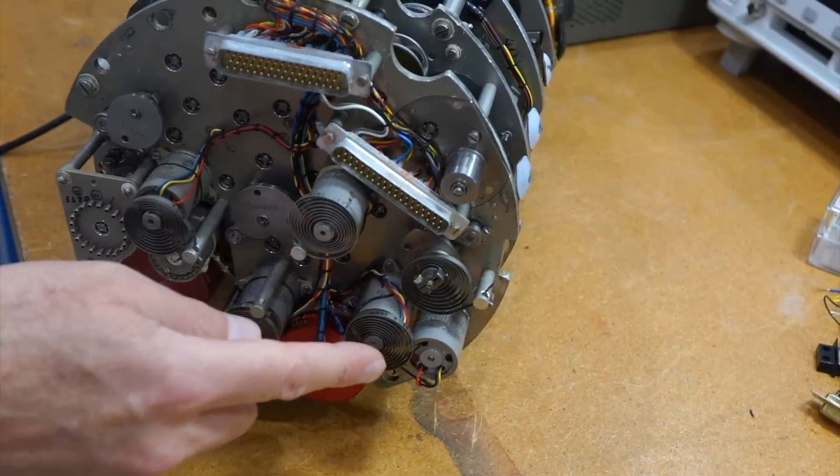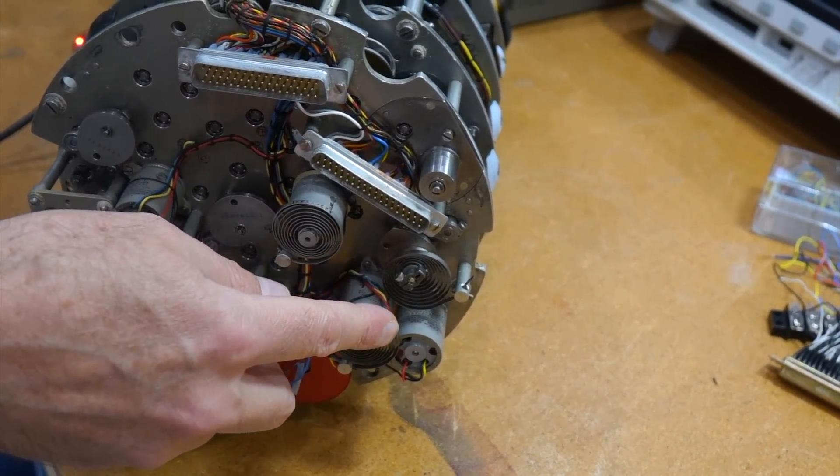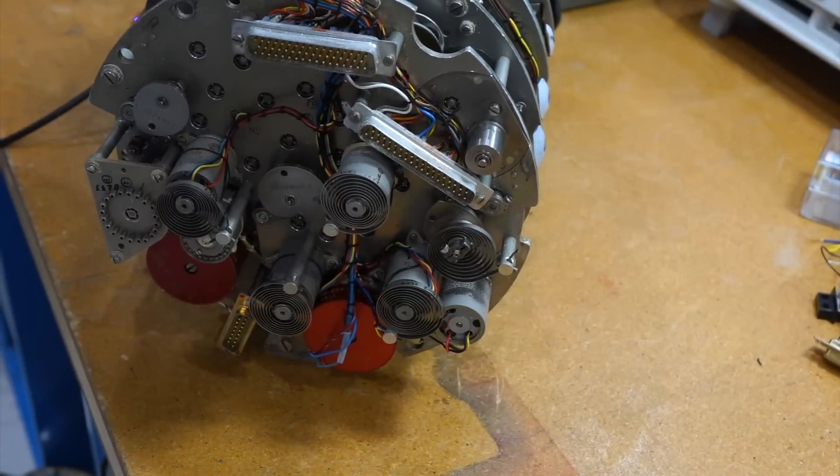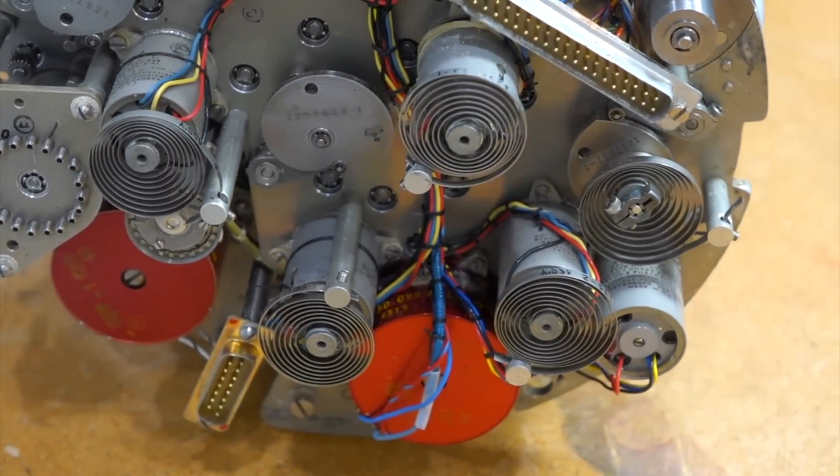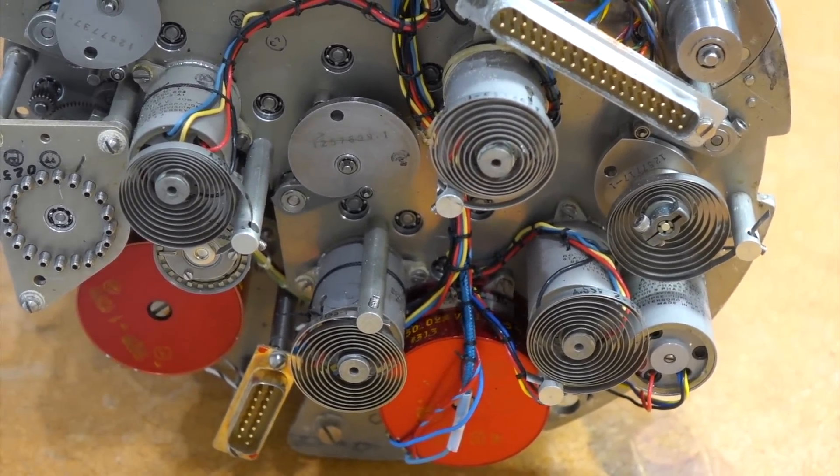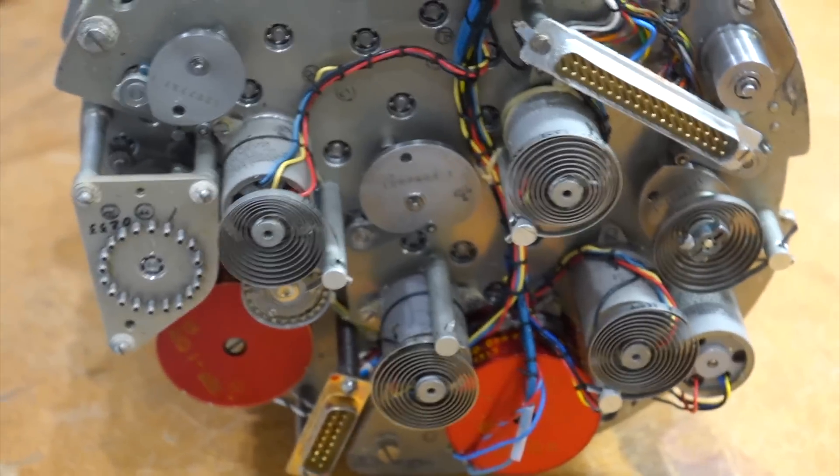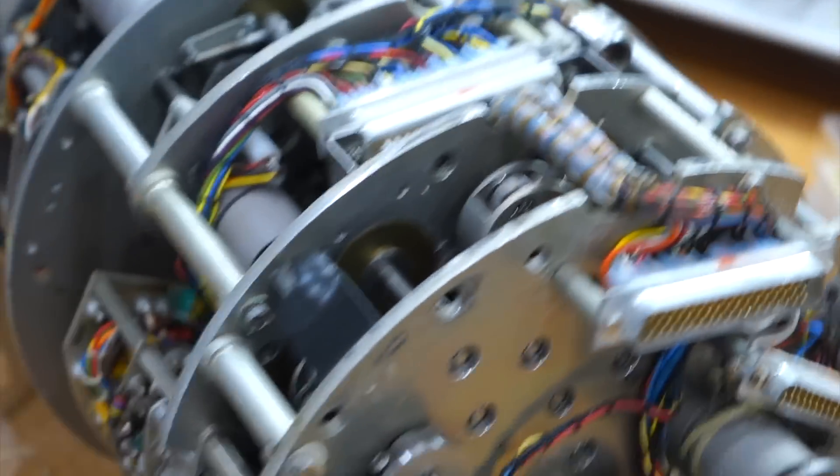And then these weird springs on top, these are to prevent backlash. So if there's any play in the gears, the spring forces it into one direction, so it won't wobble back and forth.